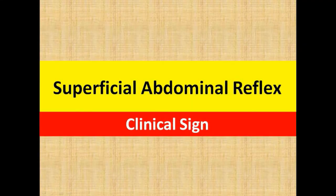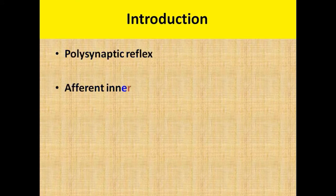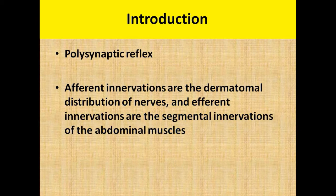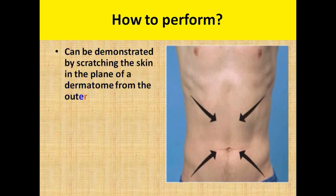In this video we'll discuss the superficial abdominal reflex, which is a clinical sign in neurology. This reflex is a polysynaptic reflex; the afferent innervations are the dermatomal distribution of the nerves, and the efferent innervations are the segmental innervations of the abdominal muscles. The root value is T7 to T12.